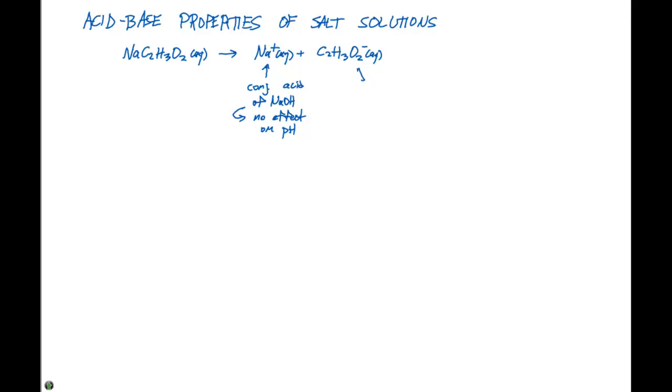We showed from the previous video that this has no effect on the pH. If we look at the acetate ion, this is the conjugate base of HC2H3O2, or acetic acid, which is a weak acid. Therefore, this is going to influence our pH.